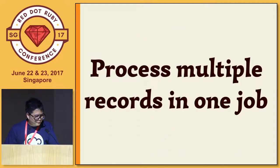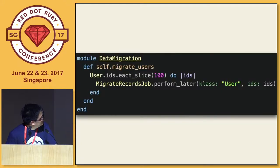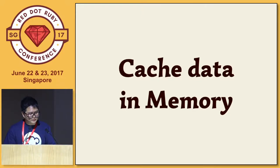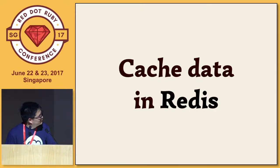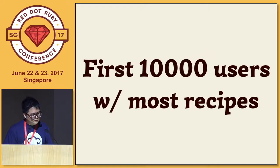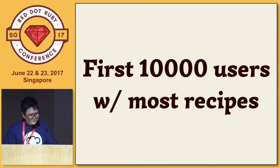Process multiple records in one single job — use each_slice to process 100 users per job. If you process 100 records and some are already created, cache them in memory or in Redis for even faster performance. Migrate important things first — for example, only migrate the first 10,000 users with the most recipes.